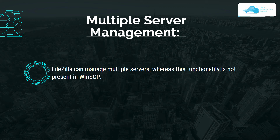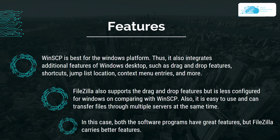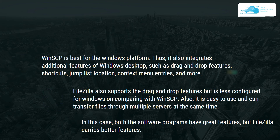Next: features. WinSCP is best for the Windows platform and integrates additional Windows desktop features such as drag and drop, shortcuts, jump list, location context menu entries, and more. FileZilla also supports drag and drop but is less configured for Windows. FileZilla is easy to use and can transfer files through multiple servers simultaneously. Overall, both programs have great features, but FileZilla carries better features in this category.